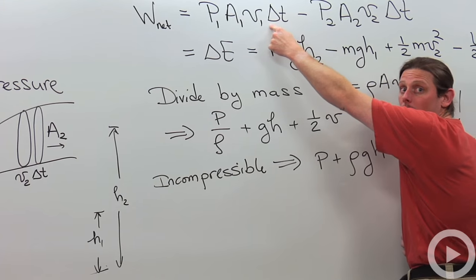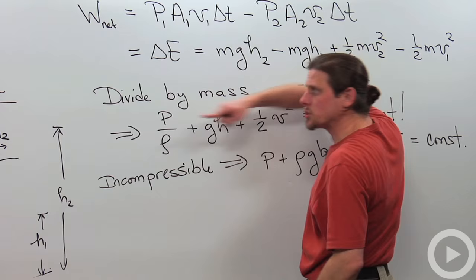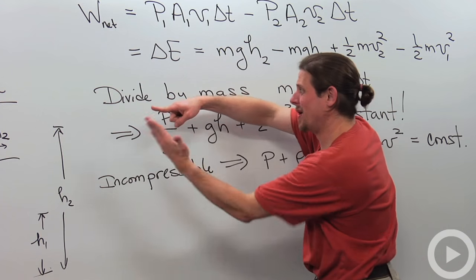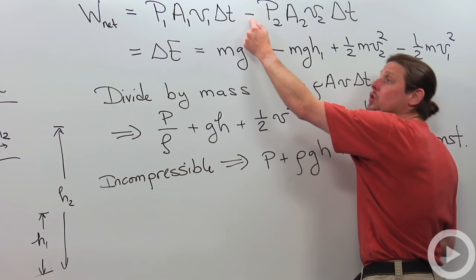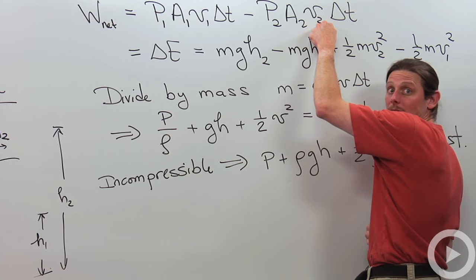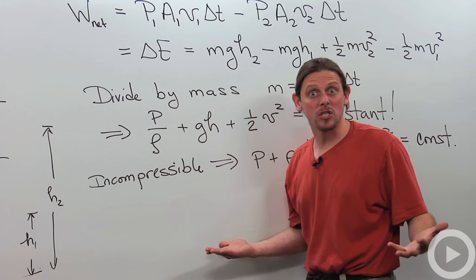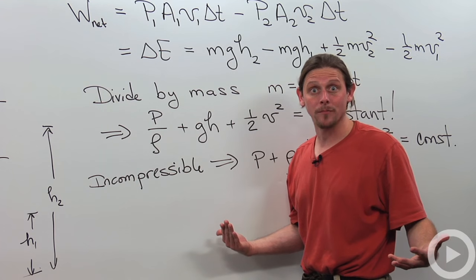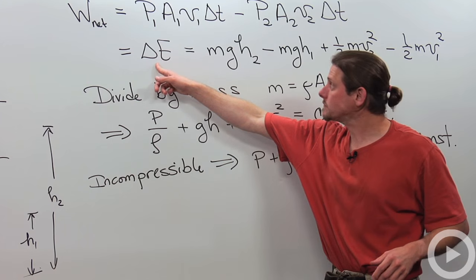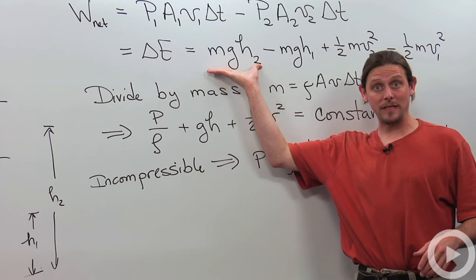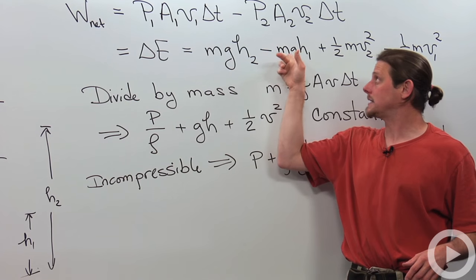At the top we've also got work that was done, but here the force was pushing the other way. The fluid moved that way but the force was pushing that way. So that's a negative sign: minus pressure area times displacement. Now that net work, as a result of the work energy theorem, will equal the change in total energy of the fluid.